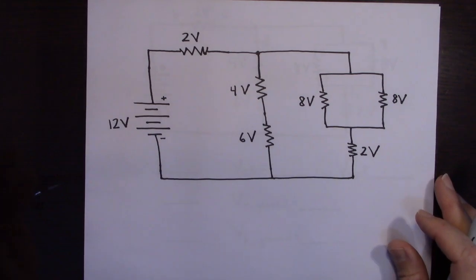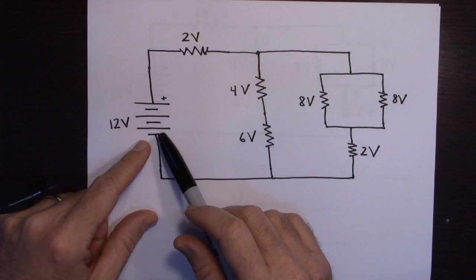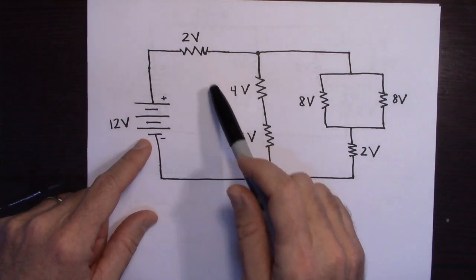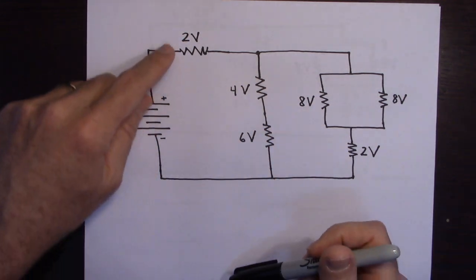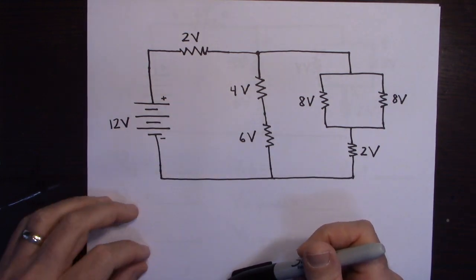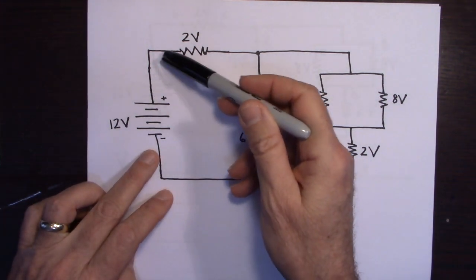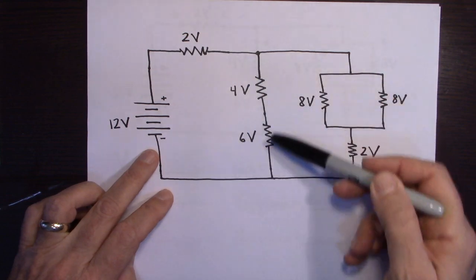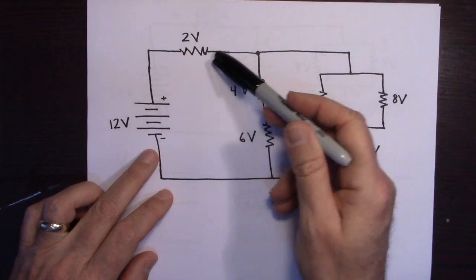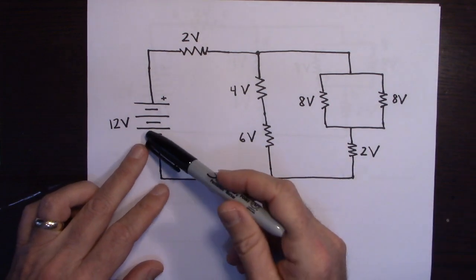Let's look at how this analogy works. Imagine you have a circuit with a 12-volt battery. Notice I'm not giving you the resistance of the resistors — I'm giving you the voltage across each resistor. This resistor has two volts across it, this one has four volts, and so on. Notice the loop rule is being obeyed: if I go up 12 volts, then going around the loop I drop two, four, and six — that's 12 volts. Same thing with the other loops.